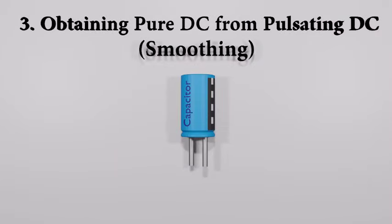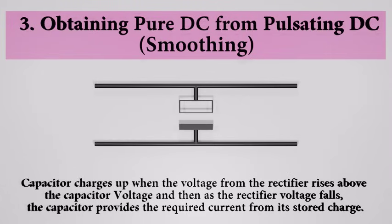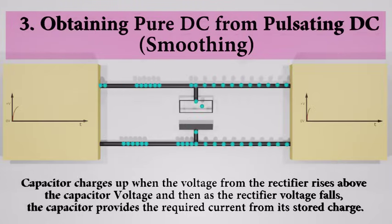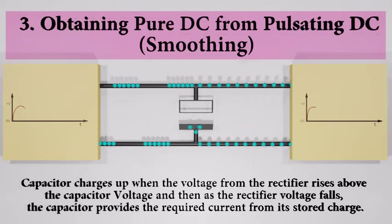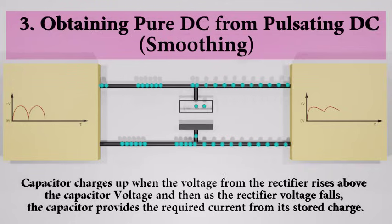A filter circuit also known as a smoothing capacitor is added to the rectifier circuit to improve the output. The smoothing capacitor converts the rippled output of the rectifier into a smoother DC output. Capacitor charges up when the voltage levels increase, and it releases the stored charges when the voltage level decreases.